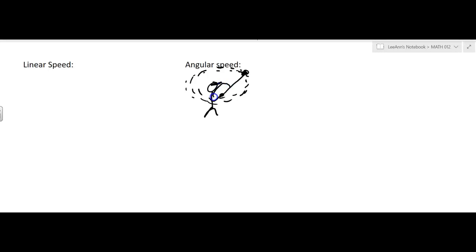Okay, so angular speed, we use an omega. That's omega. I don't know if that's one of our Greek letters we talked about earlier, but omega is equal to the angle, okay, divided by time.